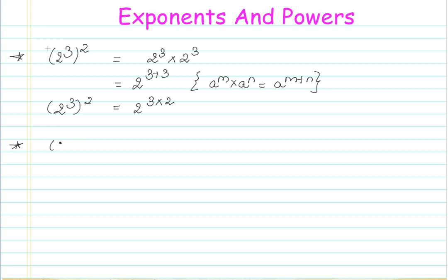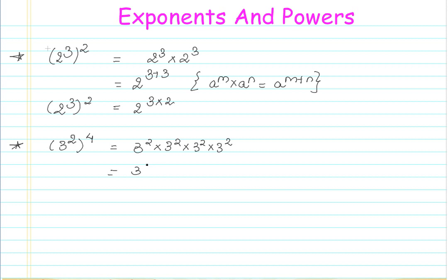Let's take one more example to understand if this gives us similar results. I have the number 3 to the power of 2, raised to the power of 4. To expand this, I'll first expand the outer exponent 4, so this becomes 3 to the power of 2, times 3 to the power of 2, times 3 to the power of 2, times 3 to the power of 2 — four times.